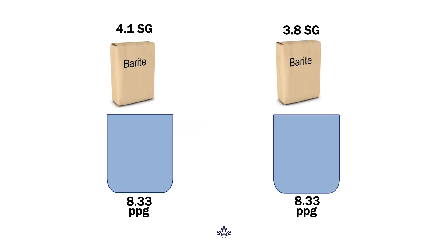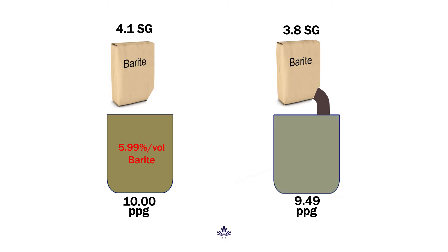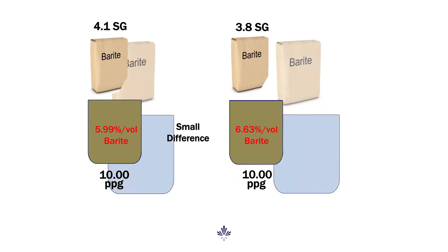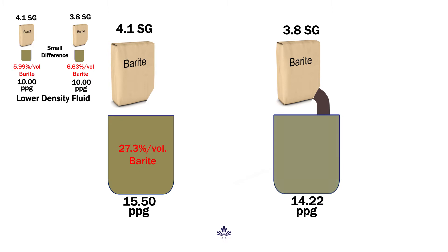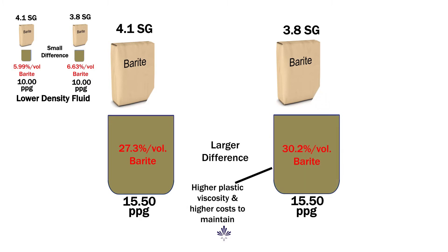The specific gravity of Barite is a topic of considerable discussion. Higher specific gravity materials require less volume of solids to achieve a target density. This effect is not as drastic in low density muds, but is more pronounced in higher density muds where a considerably larger amount of Barite is required. Consequently, higher density muds will have a higher plastic viscosity due to a higher percentage of solids, also increasing costs for other products such as wetting agents.